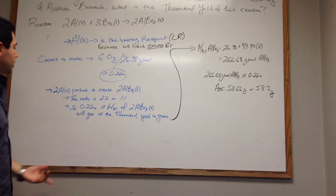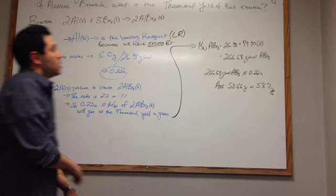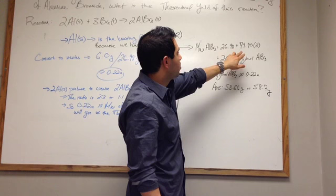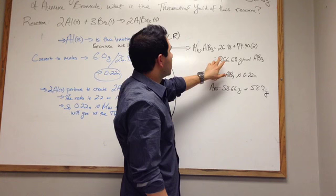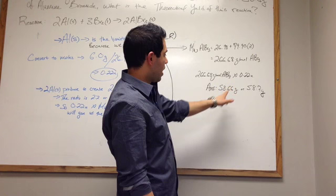So knowing this, we now know that 0.22 moles times the molecular weight of aluminum bromide will give us the theoretically yielding grams. So the molecular weight of aluminum bromide is 26.98 plus 79.90 times 3, and it gives us a result of 266.68 grams per mole of aluminum bromide. That multiplied by 0.22 moles will give us 58.66 grams, or rounded up to the next significant figure, 58.7 grams.